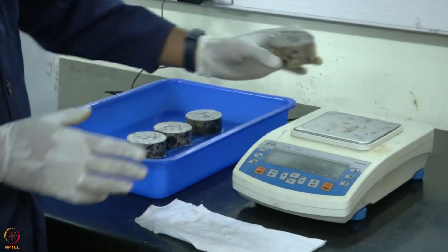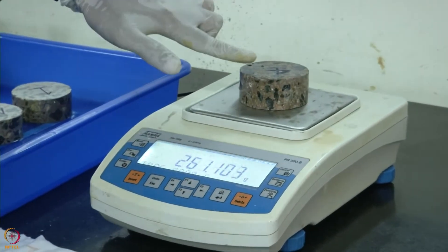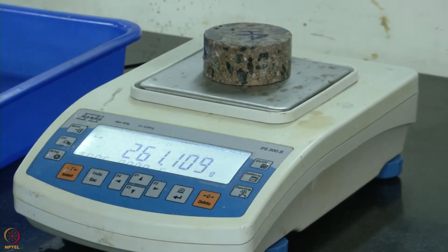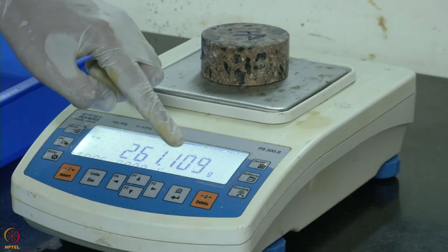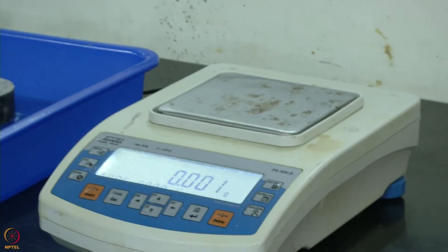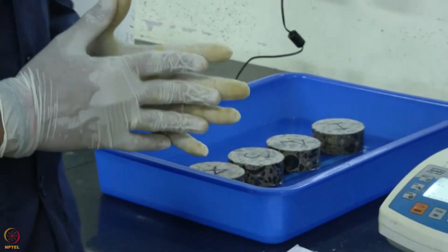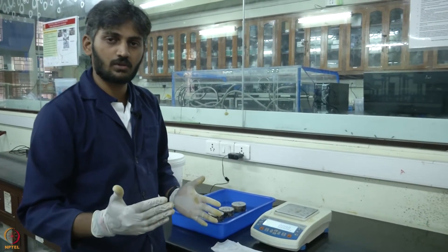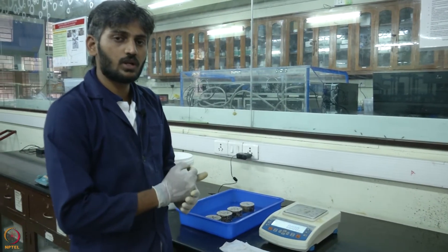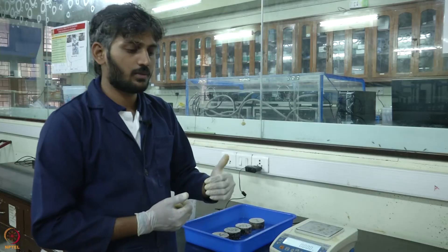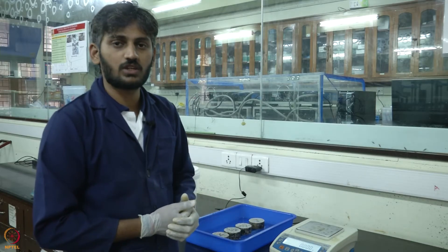Then place the sample upside down so you do not bring the exposed surface in contact with the balance, release any moisture that has been taken up, and note down the mass. This has to be done fairly quickly and the sample put back in the solution within a short span of time. You keep measuring the mass at different time intervals, and once you plot the change in mass over the square root of time, the slope of that curve gives the absorption rate of moisture inside the sample.